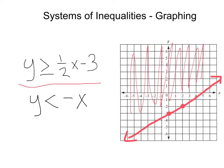Next we've got y is less than negative x. Since we have no b term, our b or y-intercept is going to be at zero. We've got a slope of negative one, that's going to be down one to the right one.